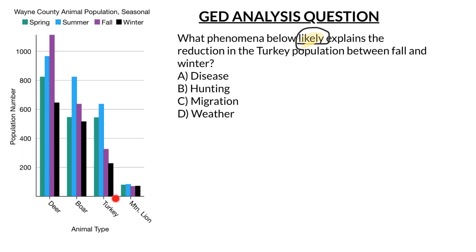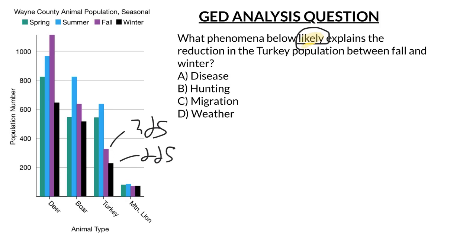We're going to come over to the chart and look at the turkey population. Fall is purple and winter is black. In the fall it's somewhere around 300 to 325, since 400 is here and 200 is here — so let's say about 325. Then the black bar for winter is just a little bit above 200, so let's call that 225. So there's been about a 100-turkey decline between these two seasons.